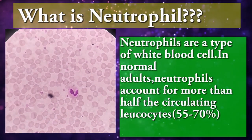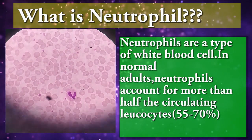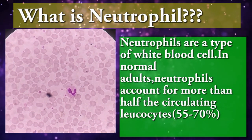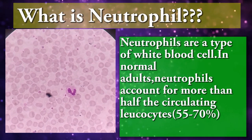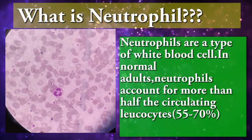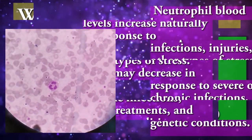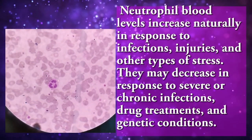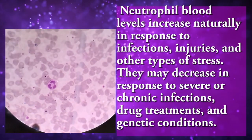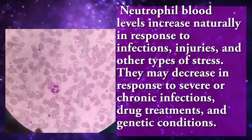What is a neutrophil? Neutrophils are a type of white blood cell. In normal adults, neutrophils account for more than half the circulating leukocytes — around 55 to 70%. Neutrophils' blood level increases naturally in response to infections, injuries, and other types of stress.